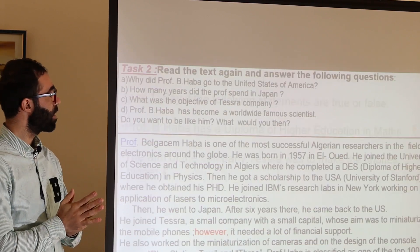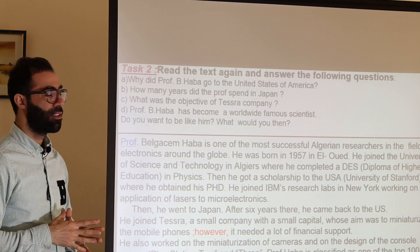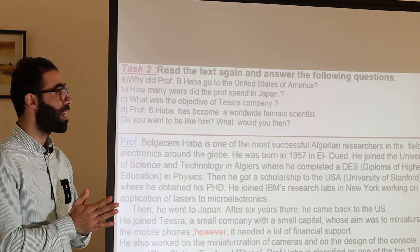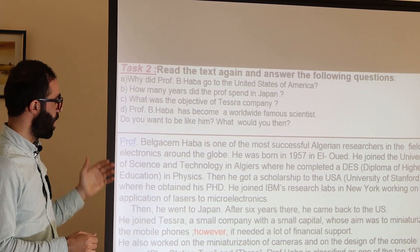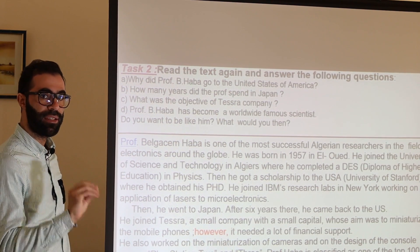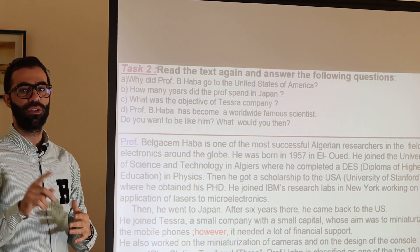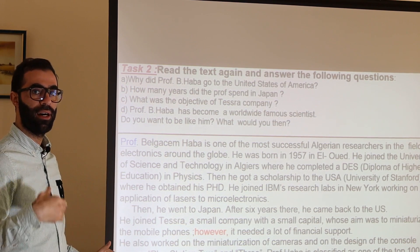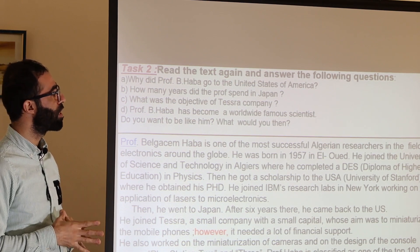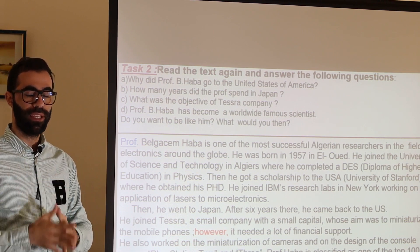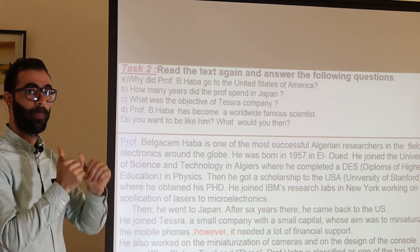Now we move to Task 2. Read the text again to get more details, then answer the following questions. The first question: why did Professor Balqasim Haba go to the United States of America? What was the reason? The second question: how many years did Professor Balqasim Haba spend in Japan? The third question: what was the objective of Tesla company? And the last question: Professor Balqasim Haba has become a worldwide famous scientist — do you want to be like him?